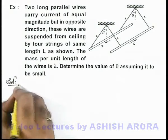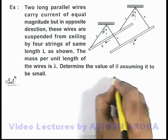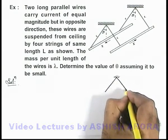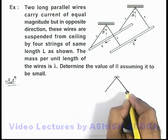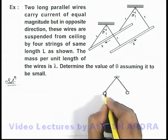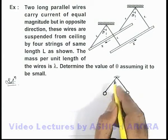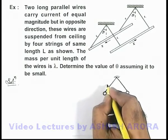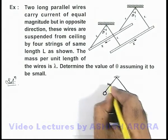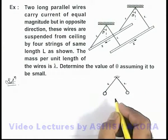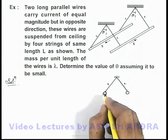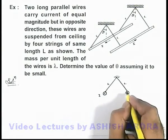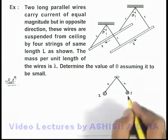Now in solution, if we just draw the cross sectional view of this situation, we can see these are the wires through which the two wires are suspended. These are the threads through which two wires are suspended. One wire carries a current i in outward direction and the other is carrying a current i in inward direction.